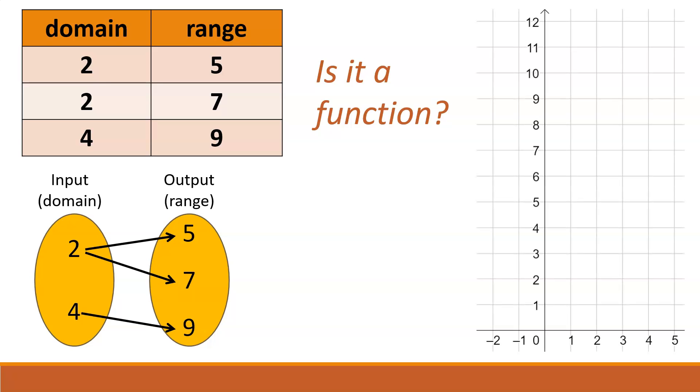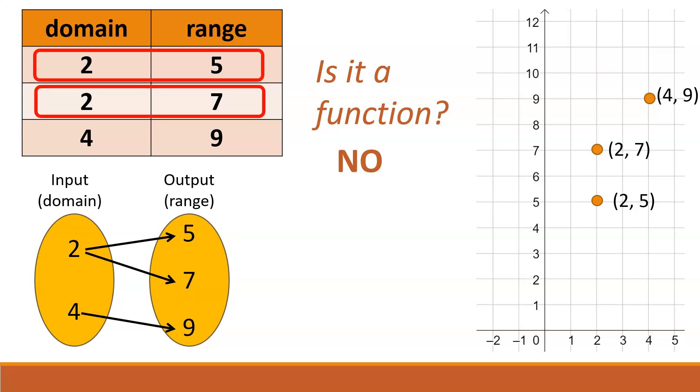And in terms of a graph, we've got three ordered pairs: 2, 5; 2, 7; and 4, 9. So, is this a function? It's not a function, and that's because we do have a domain value, the 2, that maps to two different range values. We can see it in the table, where 2 matches with 5 and 7. We can see it in the mapping, where 2 goes to both 5 and 7, and we can see it in the graph in the two points, 2, 5 and 2, 7.